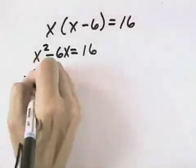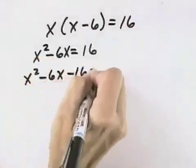Then I'm going to need to bring the 16 over to get X squared minus 6X minus 16 equals 0.